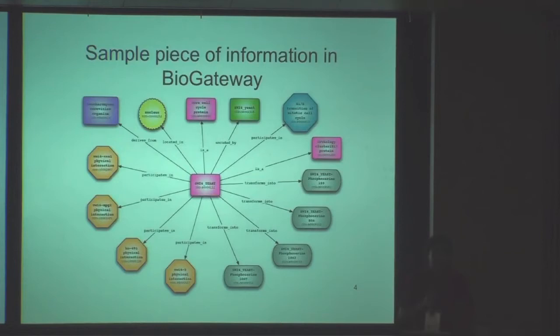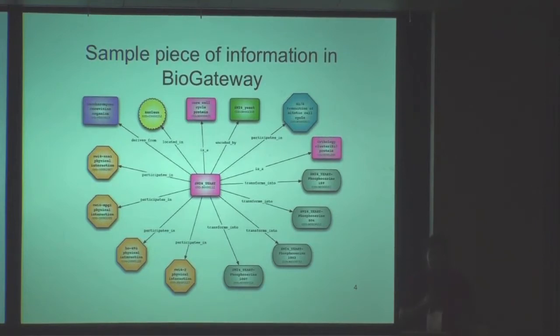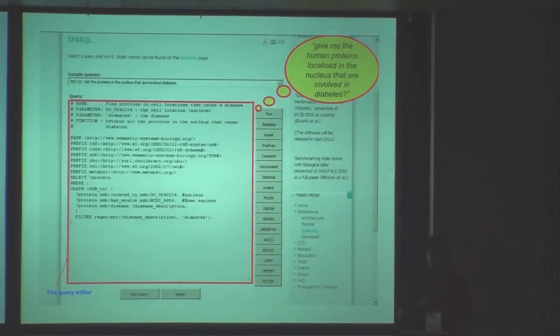So BioGateway, as I mentioned, collects biological information. This is just a sample piece of information that is collected there. In the middle, you can see, well, sorry for the image, it's not that clear. It's just a protein which is circumvented with several different relationships. It's just to show what type of information we are capturing in this knowledge base, like several localizations, molecular functions, and stuff like that. There is also a SPARQL endpoint that hopefully we will be able to use this week. Don't stress it too much if you are going to use it. Don't hack it, please. In this website, you will be able to find already a set of around 40 pre-canned queries. You can customize your query, like in this case, there is an example to retrieve the human proteins that are localized in the nucleus and that are involved in a given disease like diabetes.